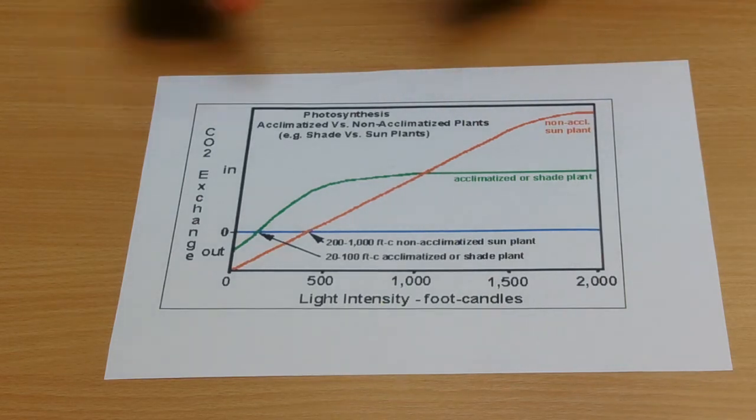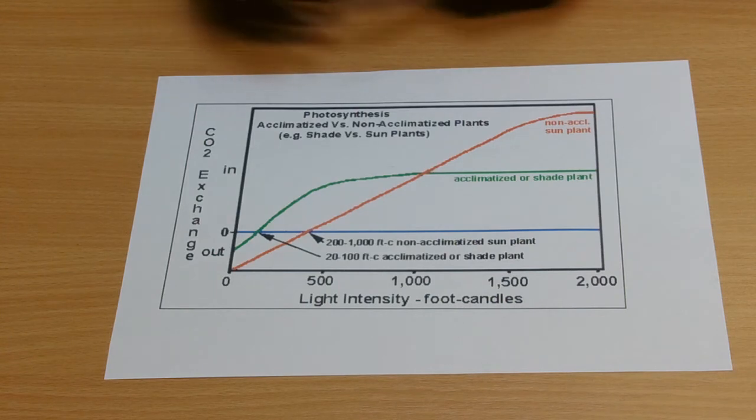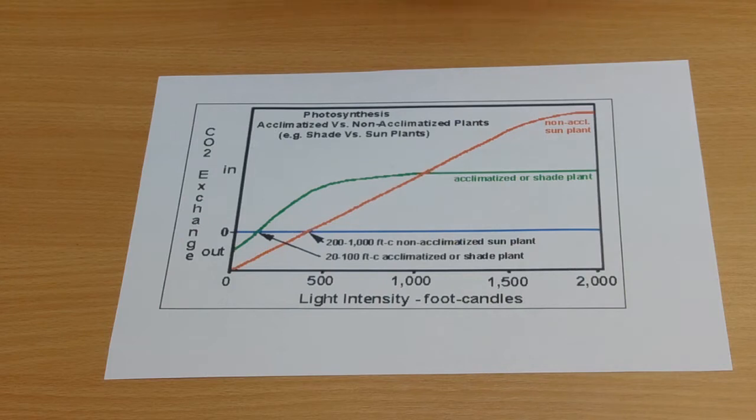And so plants have a variety of compensation points, a variety of places where suddenly at a certain light intensity, the photosynthesis will outstrip the respiration.